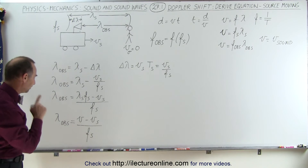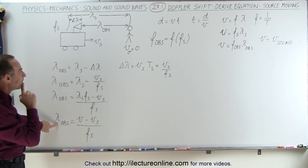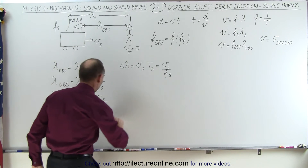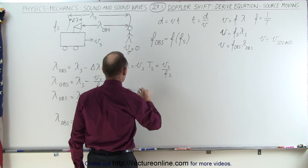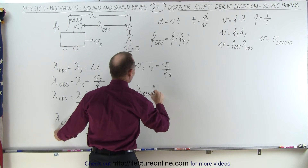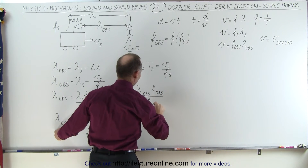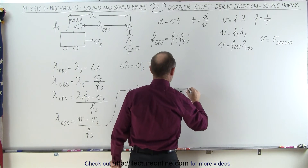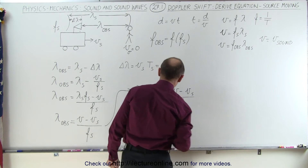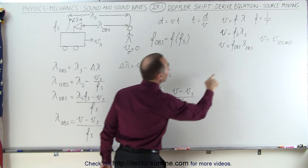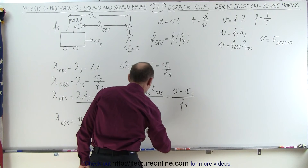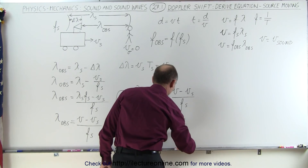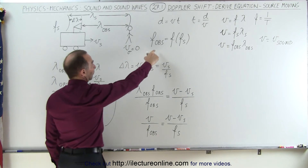We're getting closer. Next, we multiply the numerator and denominator of the left side by F_obs: (λ_obs × F_obs) / F_obs. Notice that λ_obs × F_obs equals the velocity of sound in air V, so now we have V / F_obs = (V − V_s) / F_s. Now we need to solve for the frequency observed.